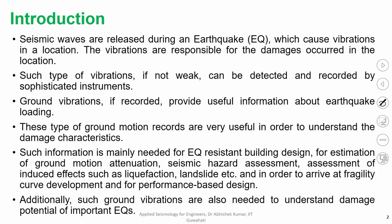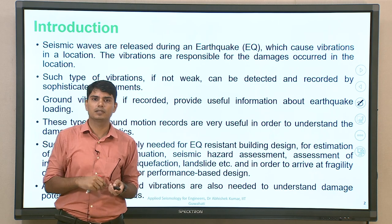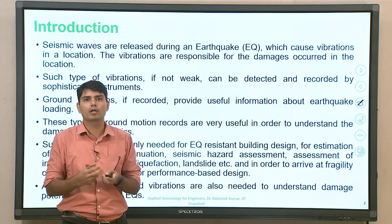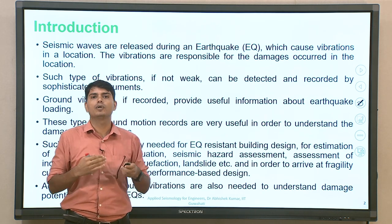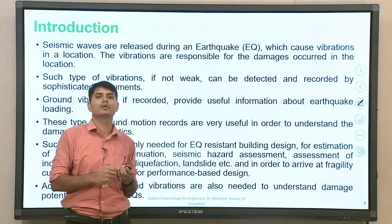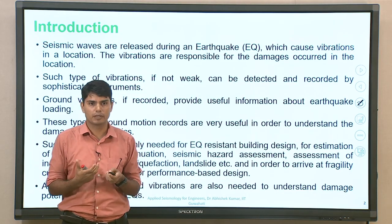All those things can be done using ground motion records. These types of ground motion records are very useful to understand the damage characteristics — damage in terms of buildings, damage in terms of induced effects. If talking about hilly terrain, definitely landslide; if talking about level areas with cohesionless soil and high water table, one can talk about liquefaction. Understanding ground motion which is likely to occur or which has occurred helps assess what triggered so much failure during, for example, the 2023 Turkey earthquake.